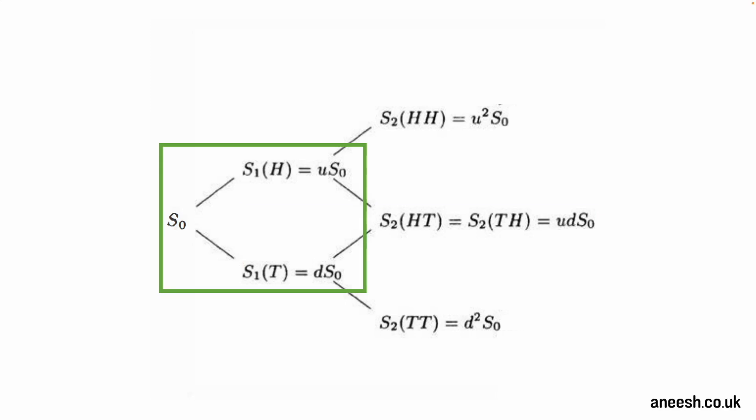While it's not necessary to understand the delta required at each time period, we will calculate this and show how the delta held by the seller of the option must change at each time period to appropriately hedge their position. This means that as time periods pass and the price of the stock is revealed, the delta on the hedge will need to be adjusted as the potential upward and downward movements of the option value change.